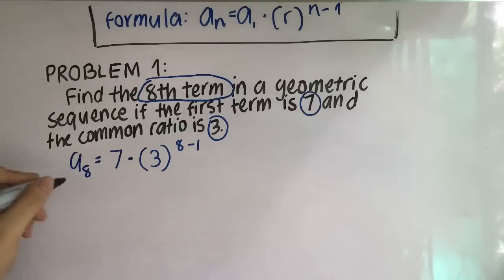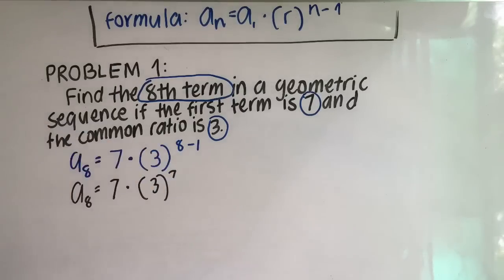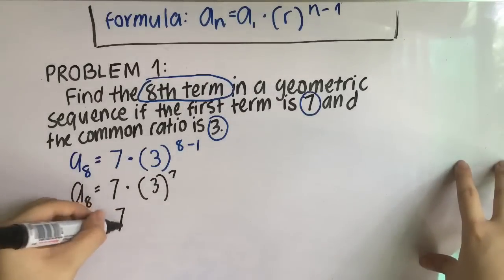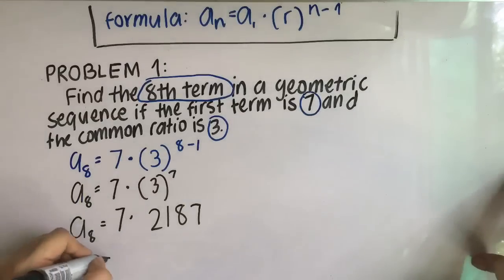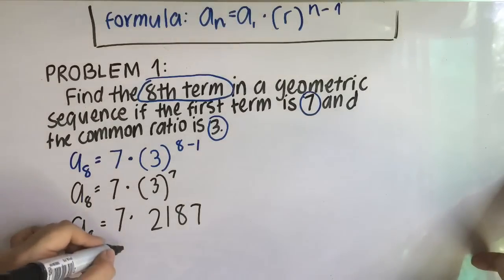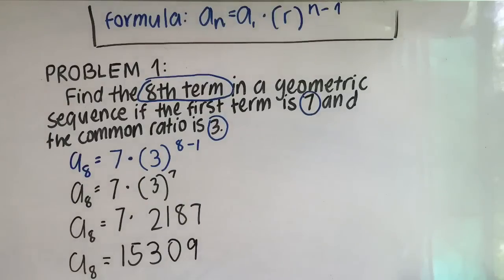Now let's evaluate our equation. 8 minus 1 is equal to 7. 3 raised to 7 is equal to 2,187. Multiply that by 7 and we have 15,309. That is our 8th term.